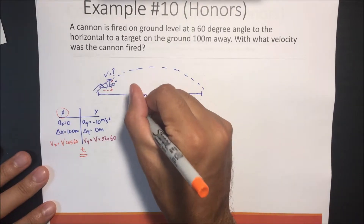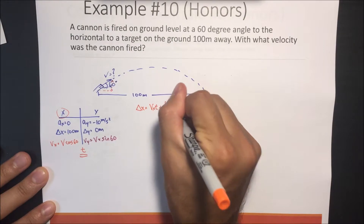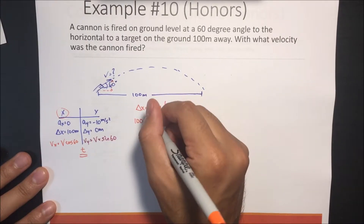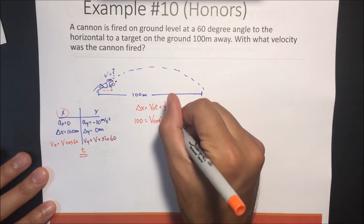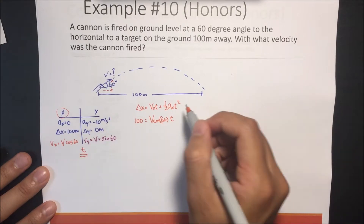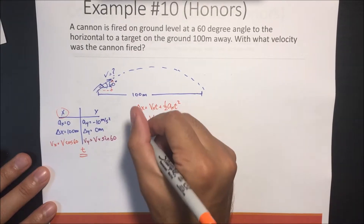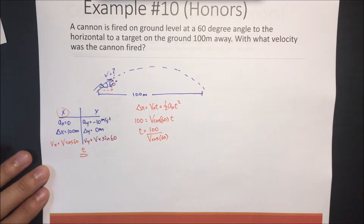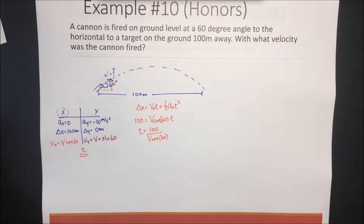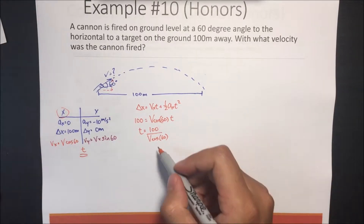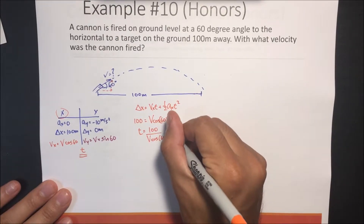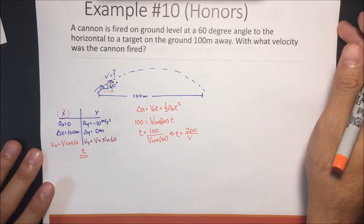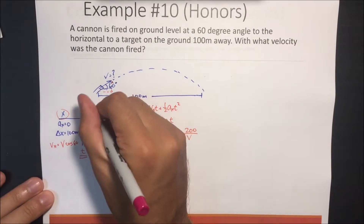Using the x-direction: displacement x equals vx·t plus one-half·ax·t². Displacement is 100, vx equals V·cos60·t, and ax is zero so that term drops out. So t equals 100 divided by V·cos60. Since cosine of 60 is 0.5, this simplifies to t equals 200 divided by V.